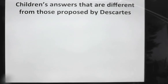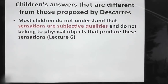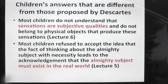Children's answers that are different from those proposed by Descartes: most children do not understand that sensations are subjective qualities and do not belong to physical objects that produce these sensations (Lecture 6). Most children also refuse to accept the idea that thinking about an almighty subject necessarily leads to the acknowledgement that this almighty subject must exist in the real world (Lecture 5).